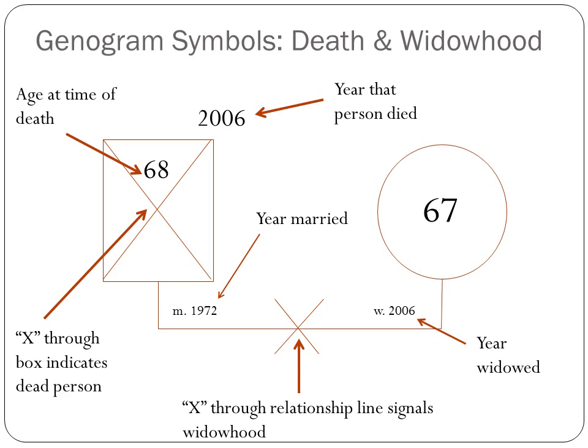What about relationships that ended with death and widowhood? We have a solid relationship line between the square and circle, but in the middle of that relationship line we see an X, indicating the relationship ended with one of the partners dying. In the bottom left-hand corner, M. 1972 shows when they were married. In the bottom right-hand corner, we put W. 2006 — the year that individual was widowed, that the relationship ended by death.